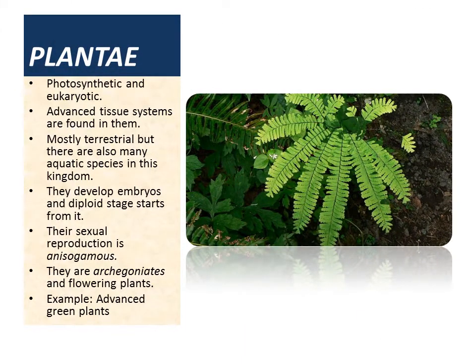Kingdom four is Plantae. They are photosynthetic and eukaryotic, meaning they have chlorophylls and plastids in their cells, which allows them to produce their own food. They have a well-developed nucleus and advanced tissue systems. Mostly terrestrial but aquatic species are also present. They develop embryos, their sexual reproduction is anisogamous, they are archegoniates, and examples include advanced green plants and flowering plants.